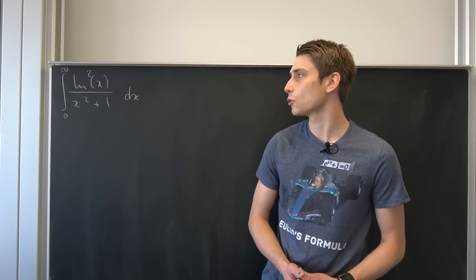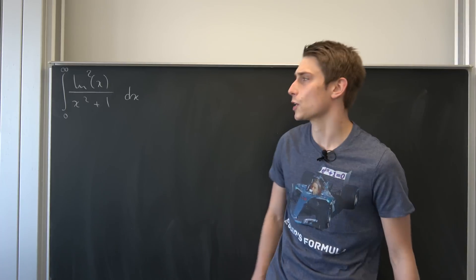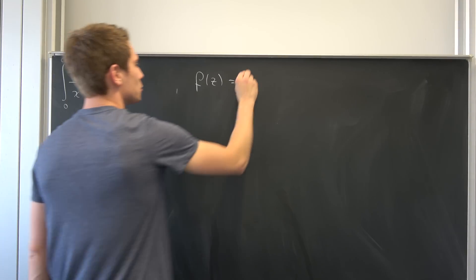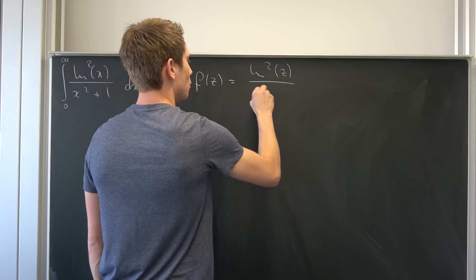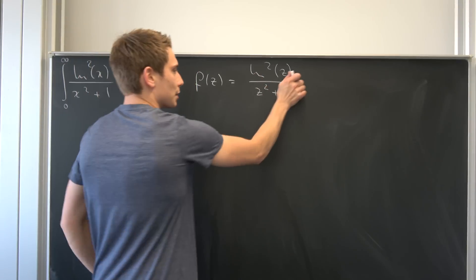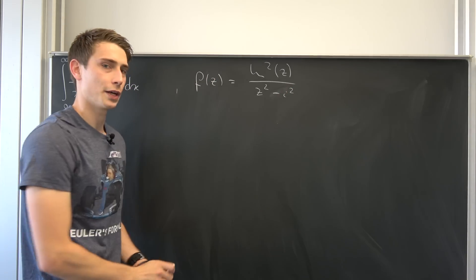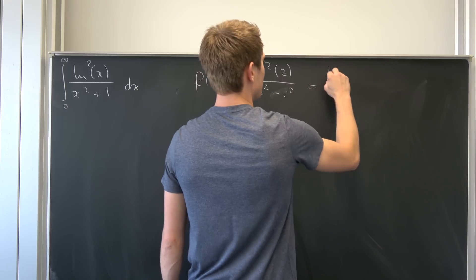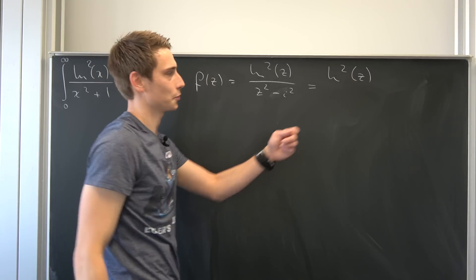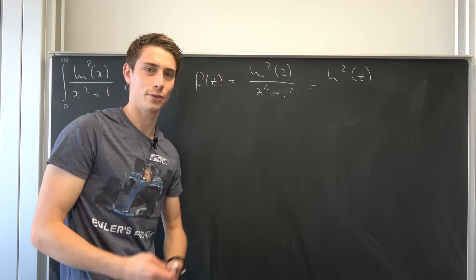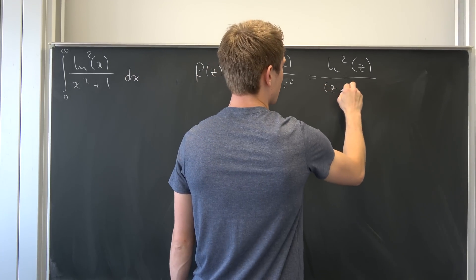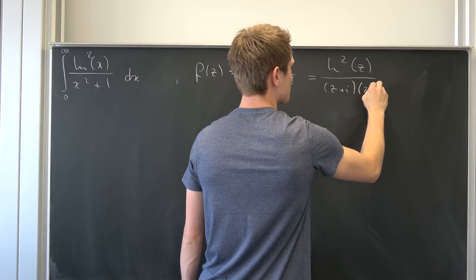Talking about complex analysis, what do we have to do? Well, first we have to introduce a little complex-valued function. So let's say we have a function f of z, and this is equal to natural log squared of z over z squared plus 1. But z squared plus 1 is nothing but z squared minus i squared — that's the difference of two squares. So we can break this up into natural log squared of z over (z plus i) times (z minus i).